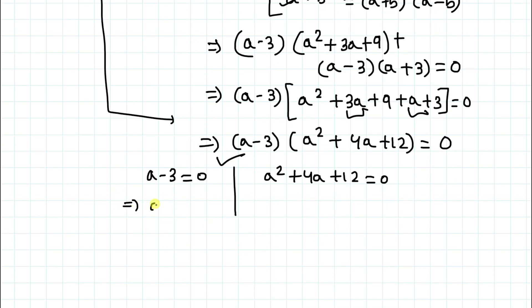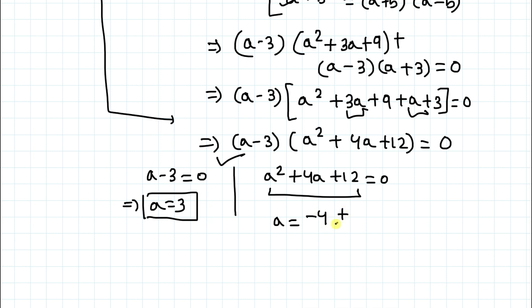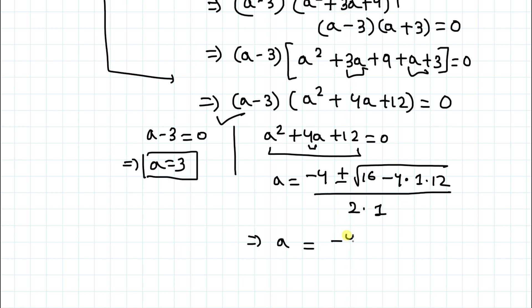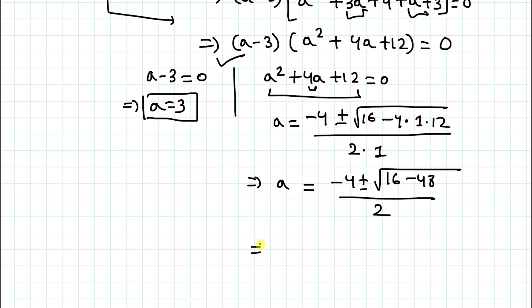From a − 3 = 0, we know a = 3 is one real solution. For the quadratic a² + 4a + 12 = 0, we apply the quadratic formula: a = (−4 ± √(4² − 4·1·12)) / (2·1), which gives a = (−4 ± √(16 − 48)) / 2, simplifying to a = (−4 ± √(−32)) / 2.